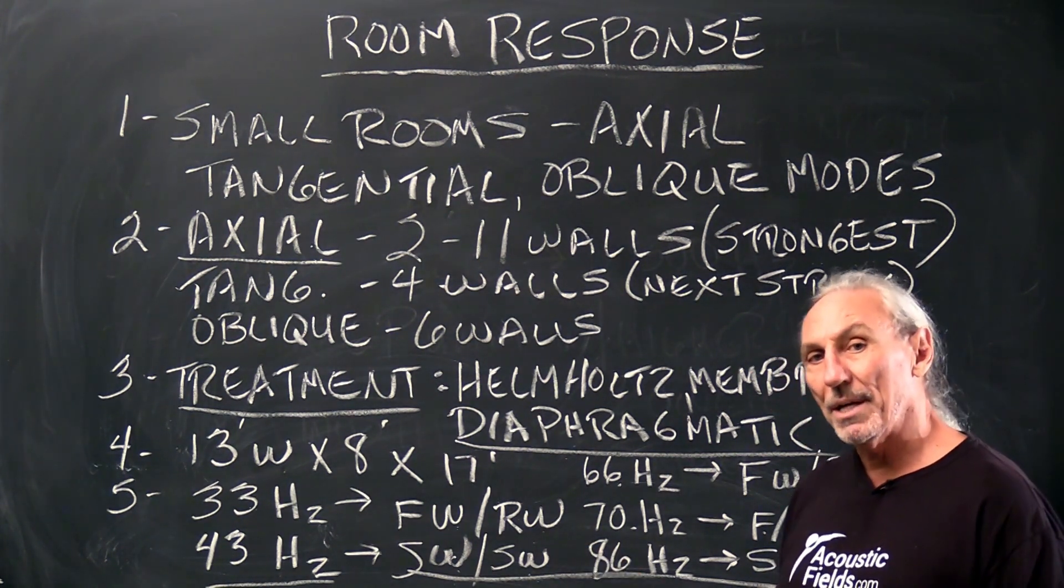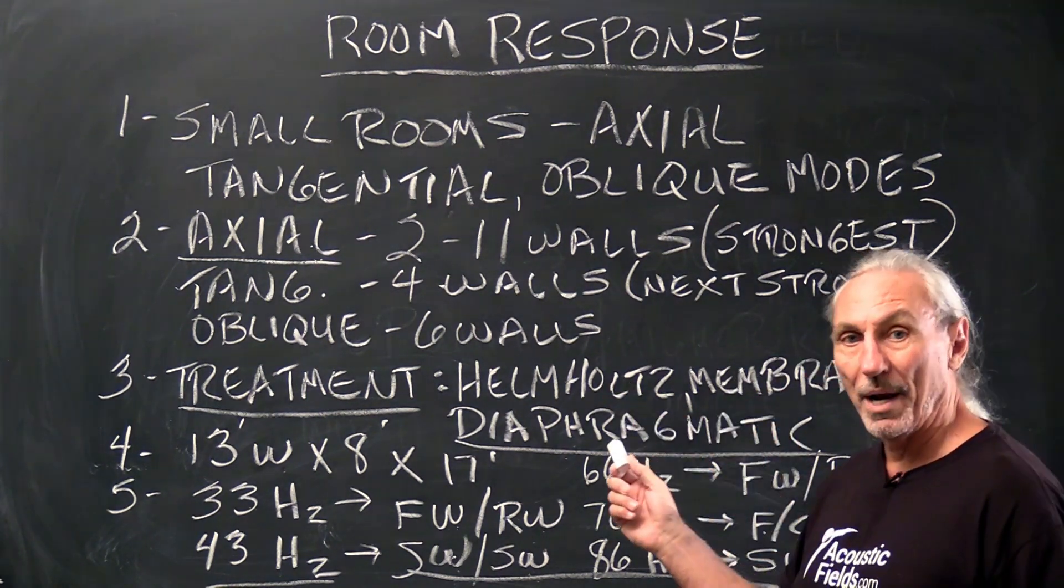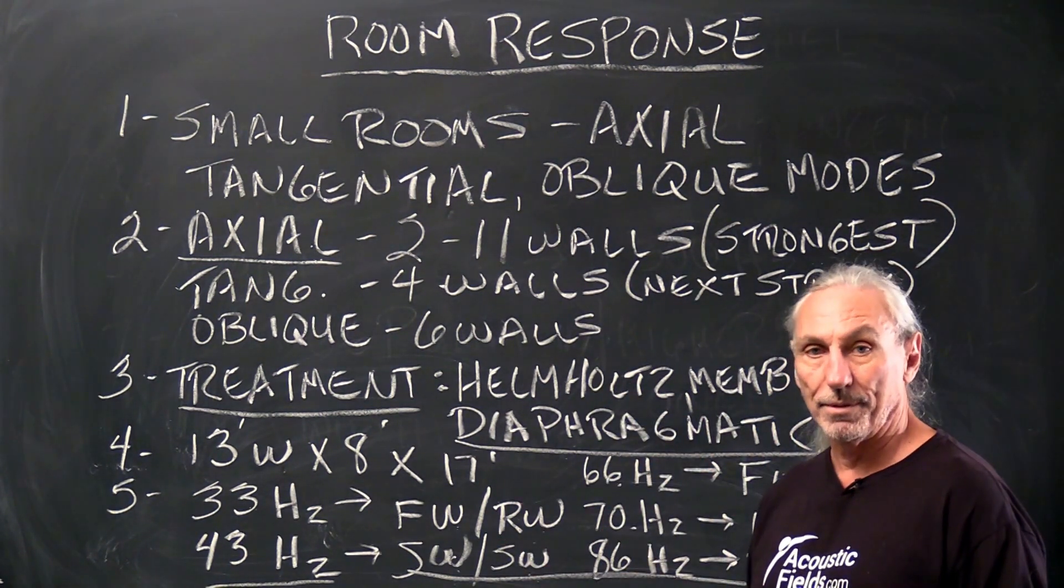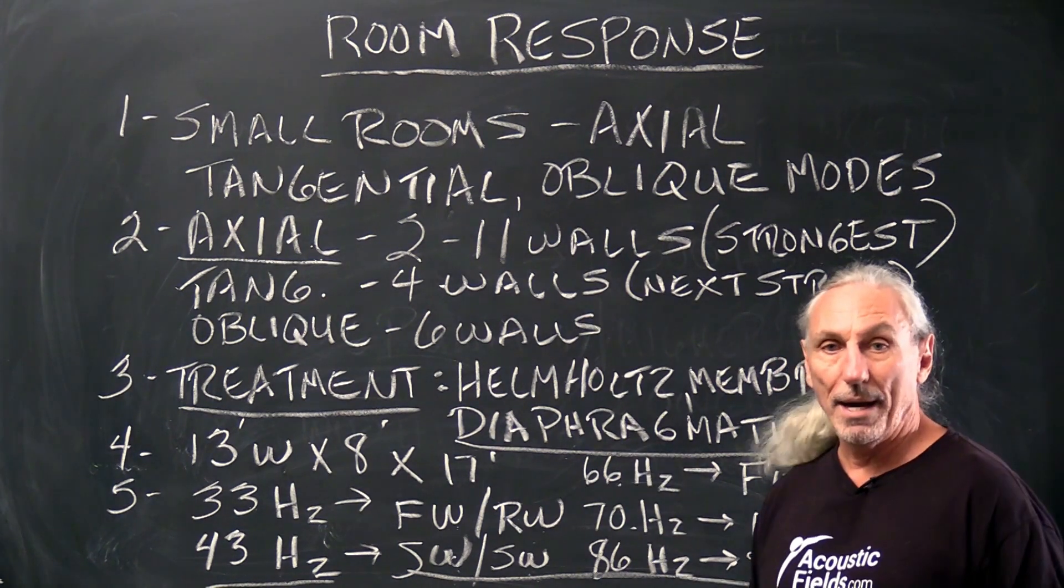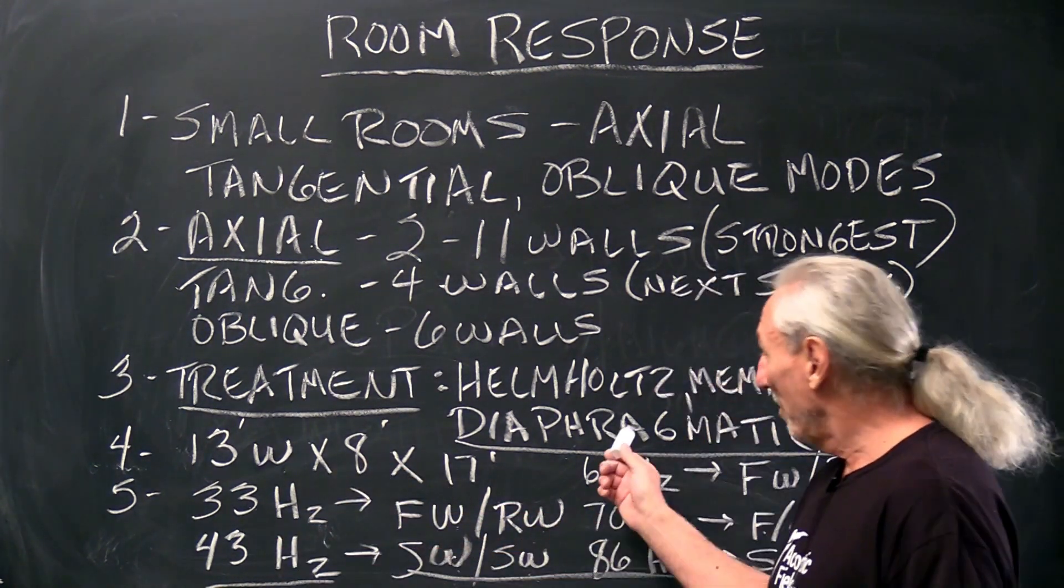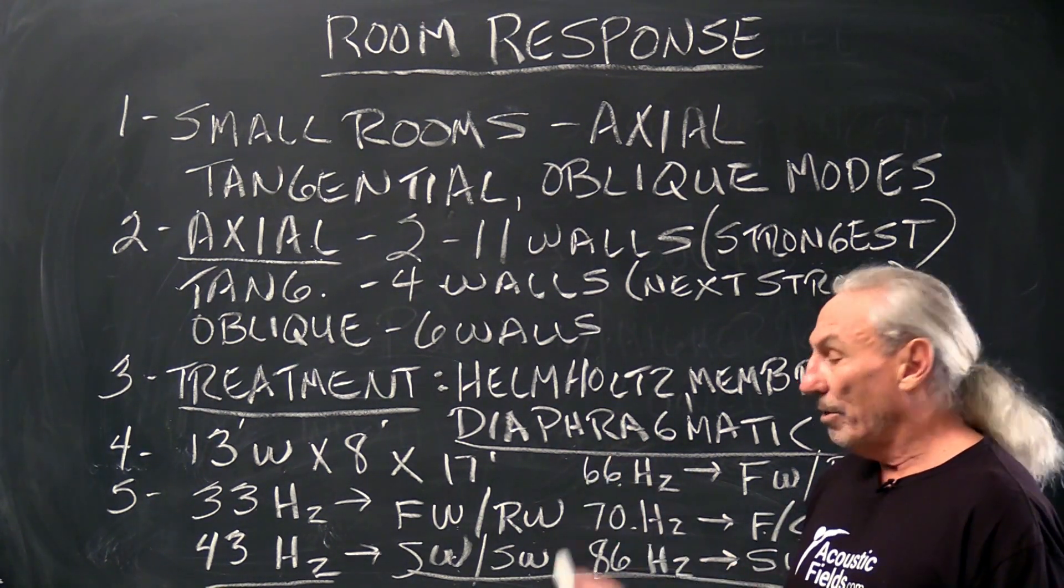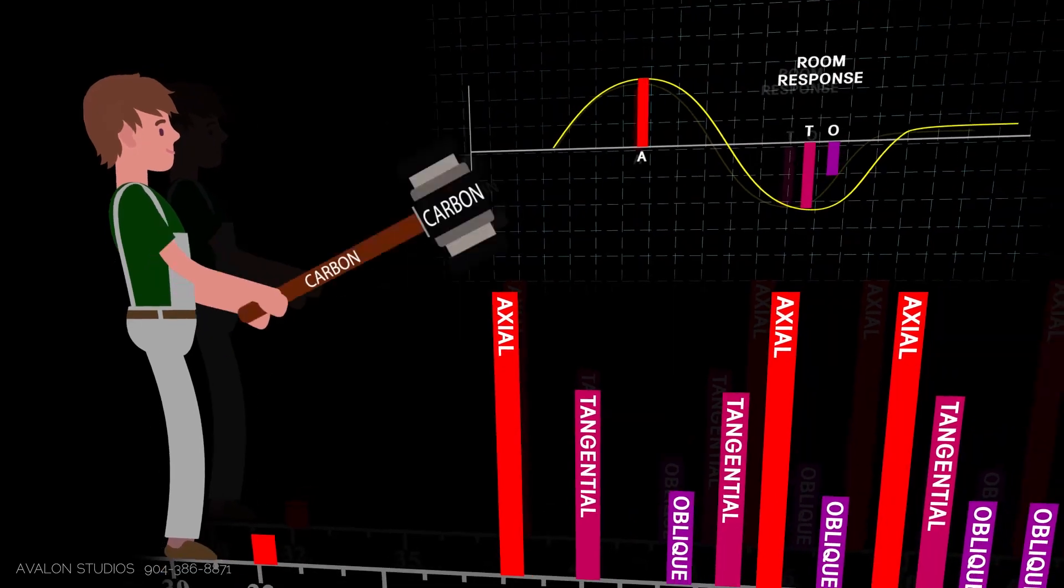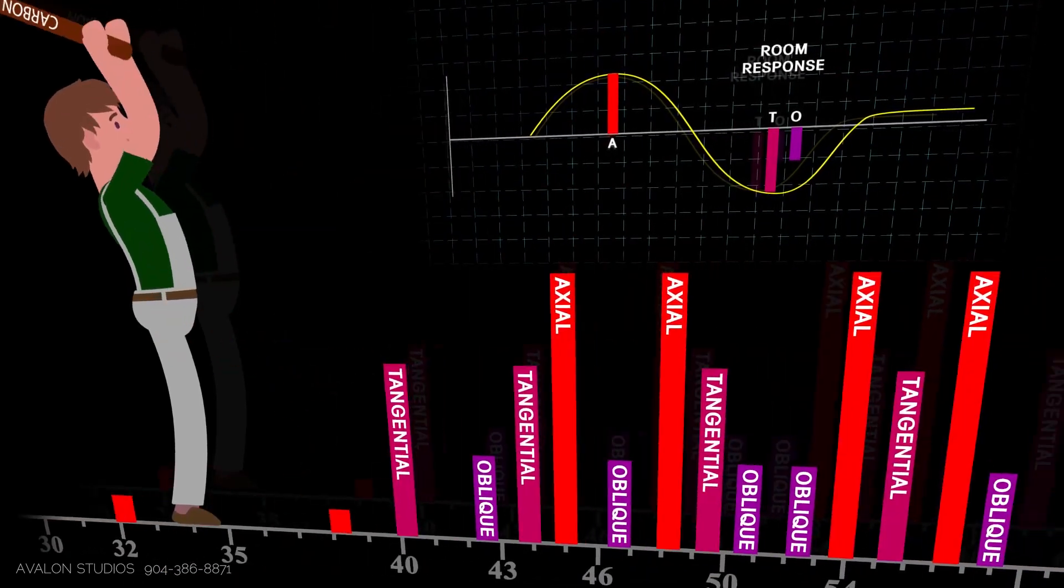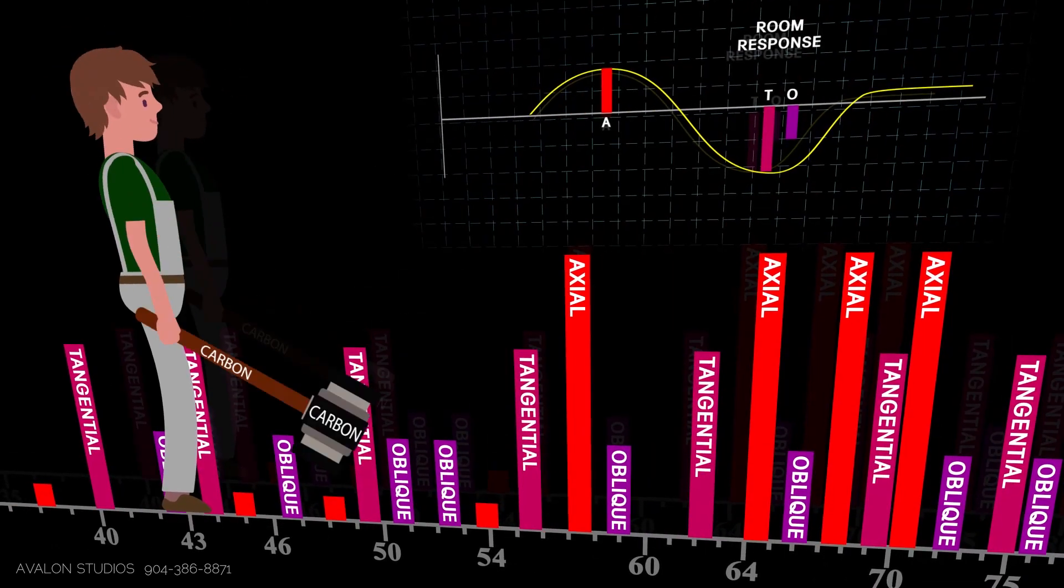So how do we treat? Well, we apply diaphragmatic, Helmholtz or membrane to treat these problems. We like diaphragmatic because these are big problems. You need big horsepower in your technology to solve them. So as our animated character is striking the axial modes, you notice the peak is going down below 100 cycles. So that's good.